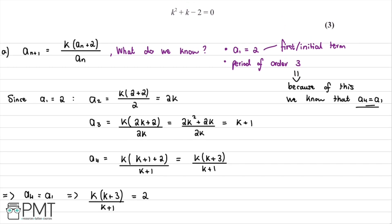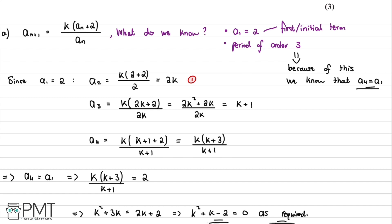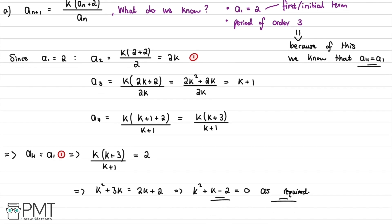This question was worth three marks. The first mark is for using the sequence formula with a1 = 2 to begin finding terms. The second mark is for setting a4 equal to a1, using the periodic order 3 property. The third and final mark is for concluding with the correct expression k² + k − 2 = 0.